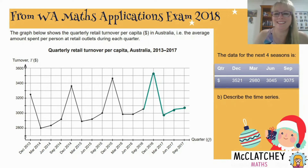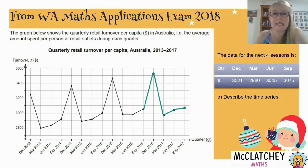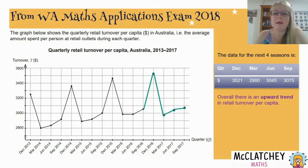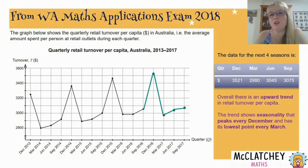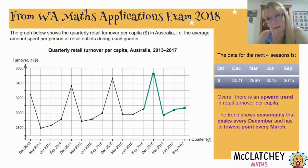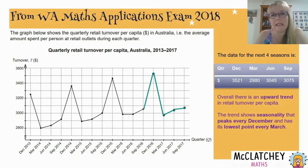We've now finished Part A. Part B asks us to describe the time series. Time series tell a story, so we write a short paragraph. I would start by saying overall there's an upward trend — the lows occurring in March are a little bit higher every year, so there's an upward trend in retail turnover per capita. Notice I've related it back to the context, not just said 'there's an upward trend.' The trend also shows seasonality that peaks every December and has its lowest point every March. Just talk about the key features: upward trend and seasonality.